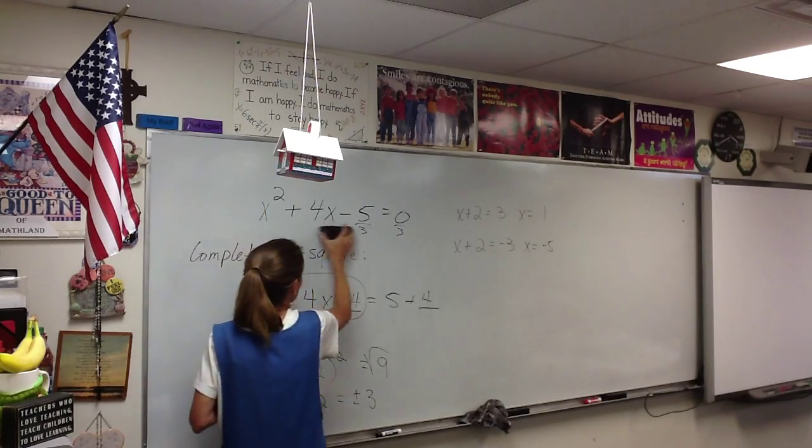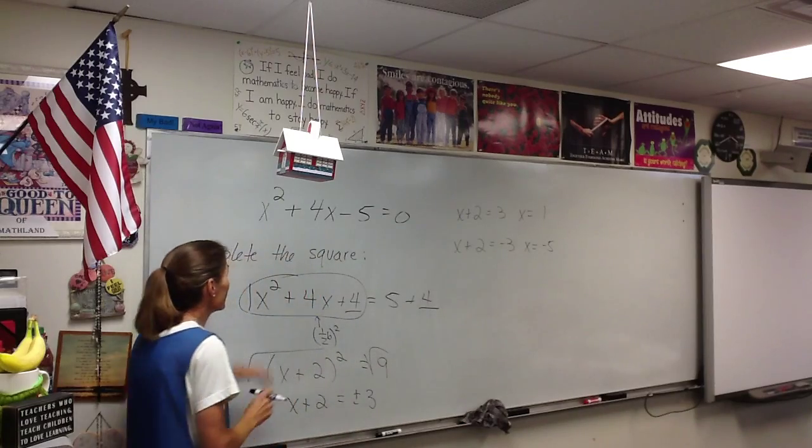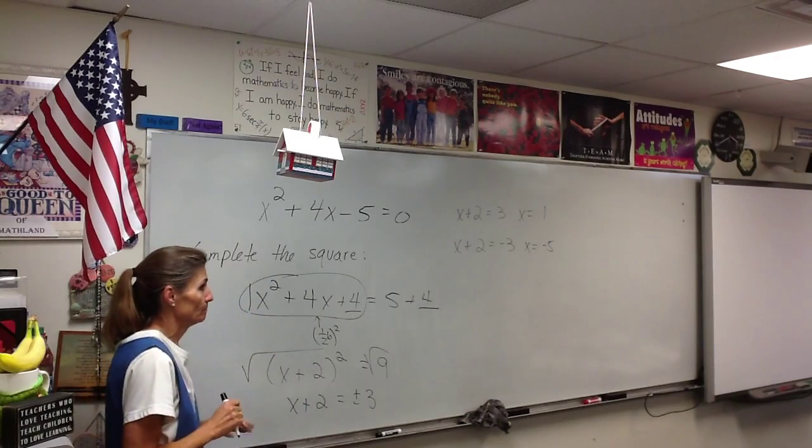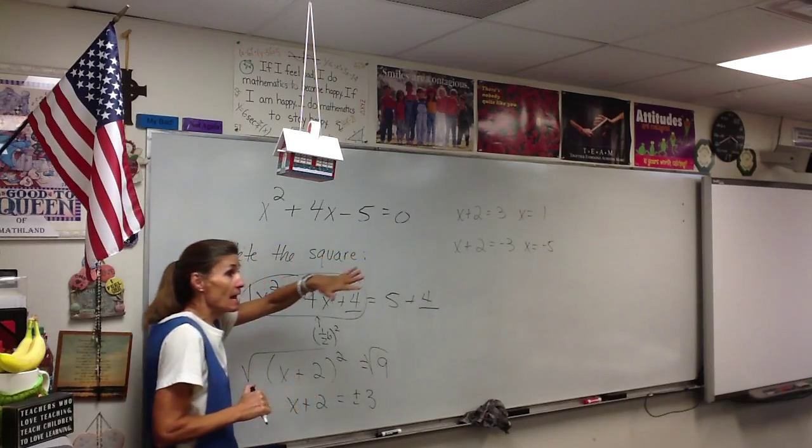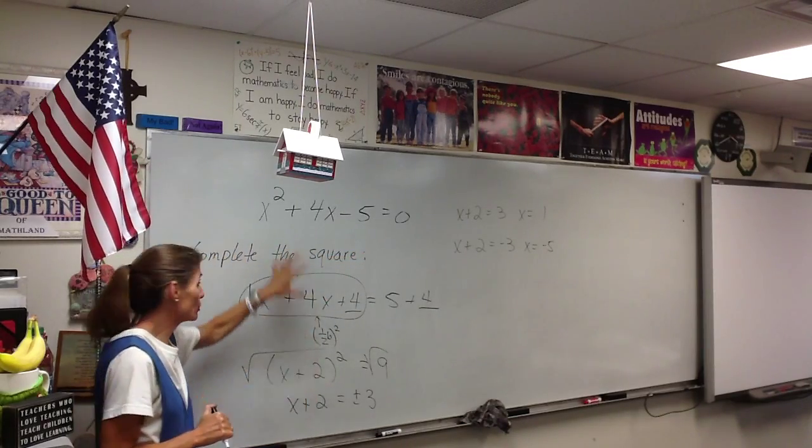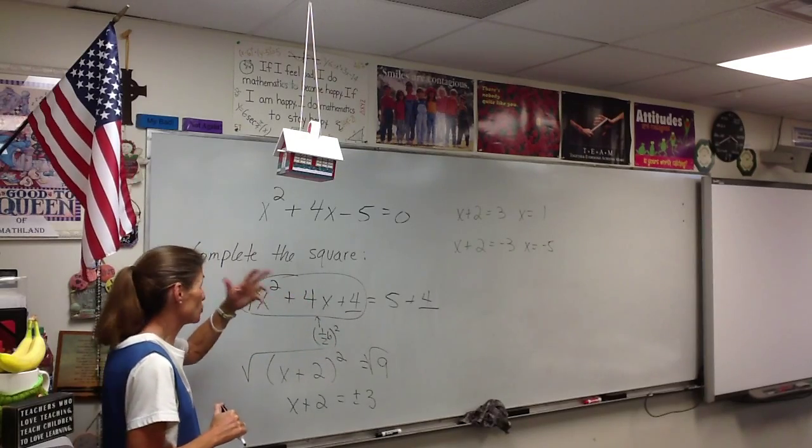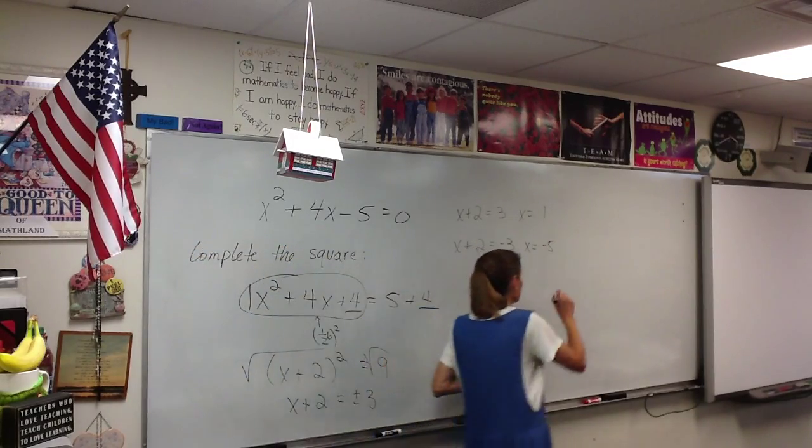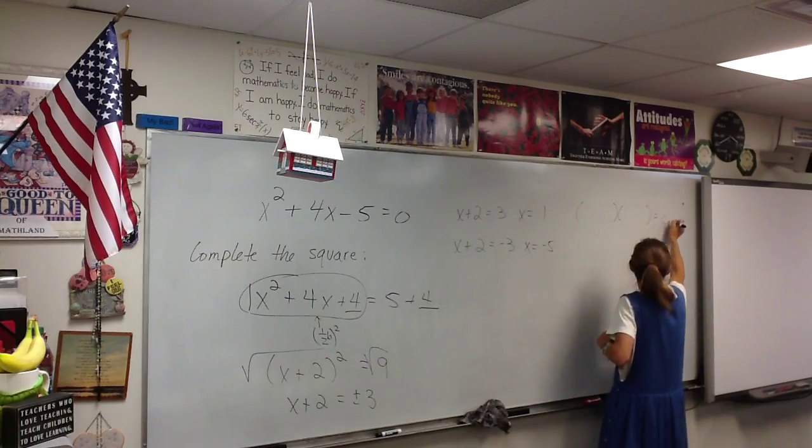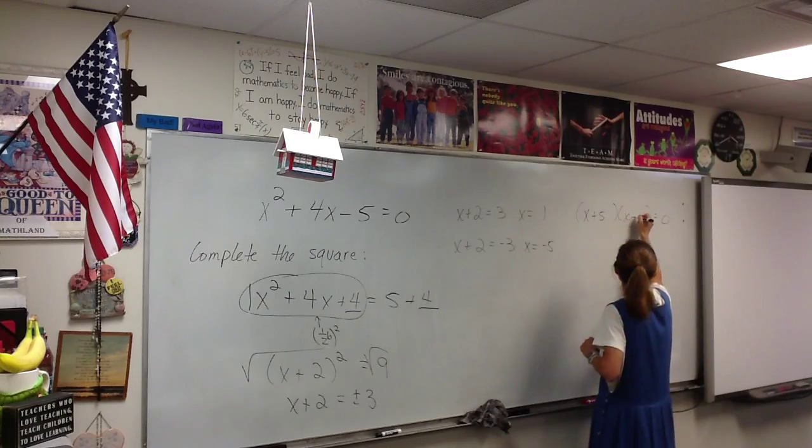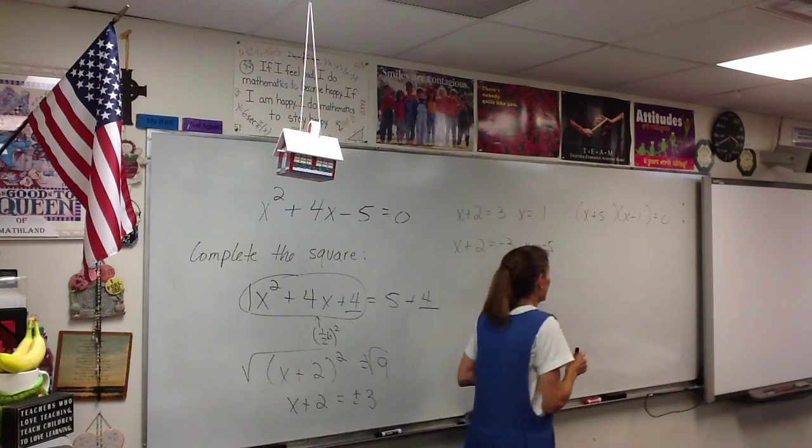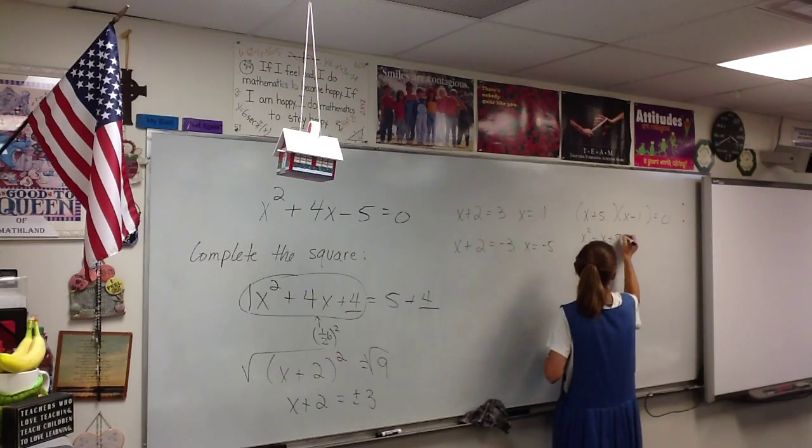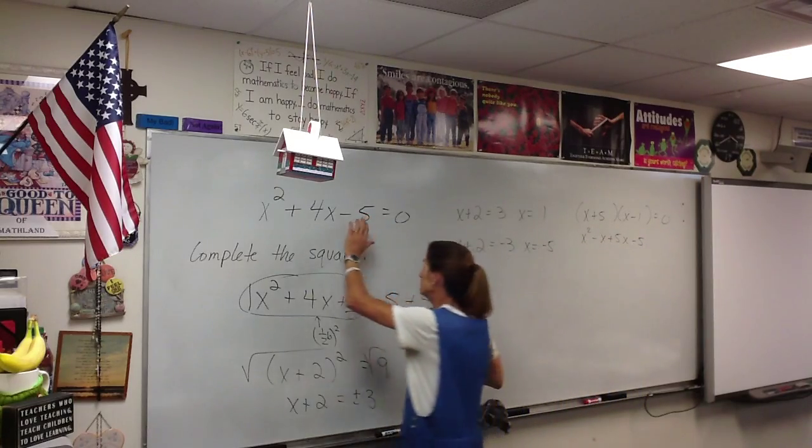Can anybody think of another way? We're going to solve the same equation. Can anybody think of another way to solve this equation besides completing the square? You can factor that. Now, every equation can have the square completed. You can use the completed square all the time. I don't recommend it, but you could. Factoring does not always work, does it? This one does factor, though. How does it factor? X plus 5. X plus 5. X minus 1. Double check that. Remember, when you foil it back, you have to get the original. So that would be x squared minus x plus 5x minus 5. Is that the original? Yep, so we're good.